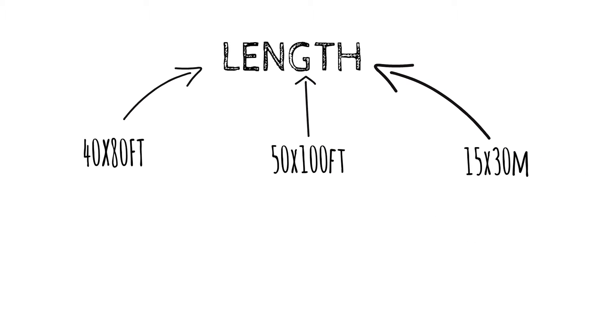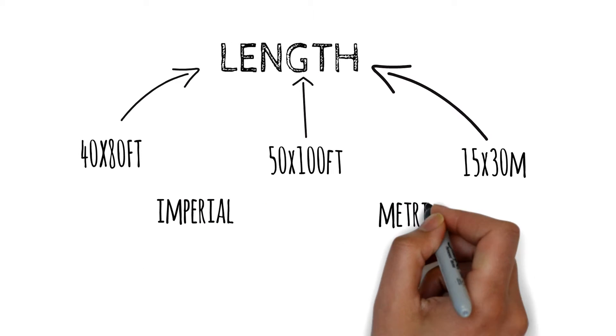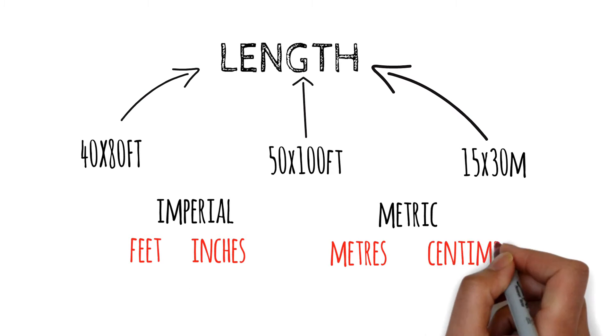Length. When you hear a plot being described as 40 by 80 feet, 50 by 100 feet, or 15 by 30 meters, it's being described in terms of length. Sellers of plots can use either imperial or metric units when describing these plots. Anything being described by feet or inches is using the imperial system. On the other hand, meters and centimeters belong to the metric system.